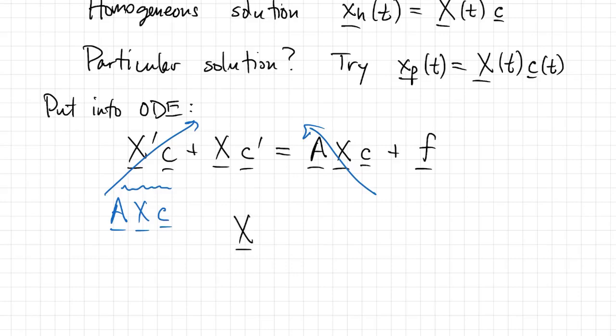All we're left with is X times C prime equals F, which if we multiply on the left by X inverse, we can solve for C prime.